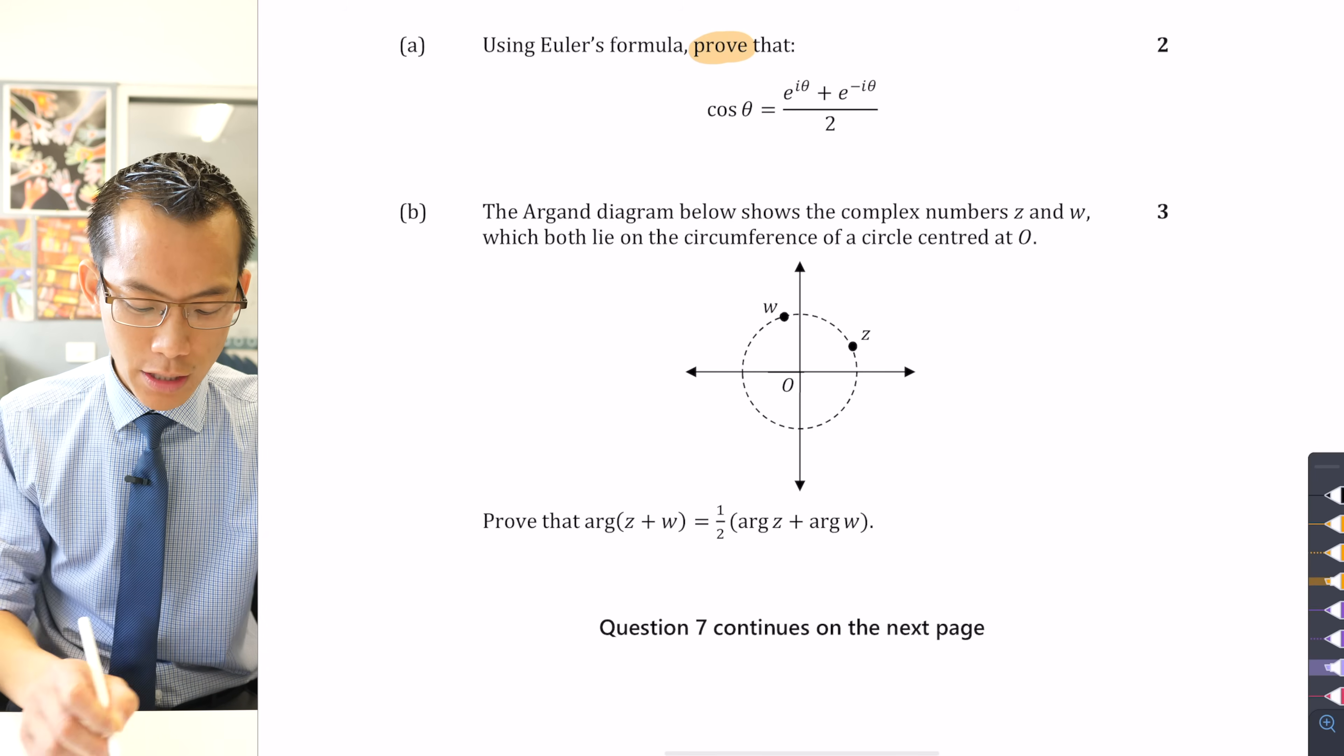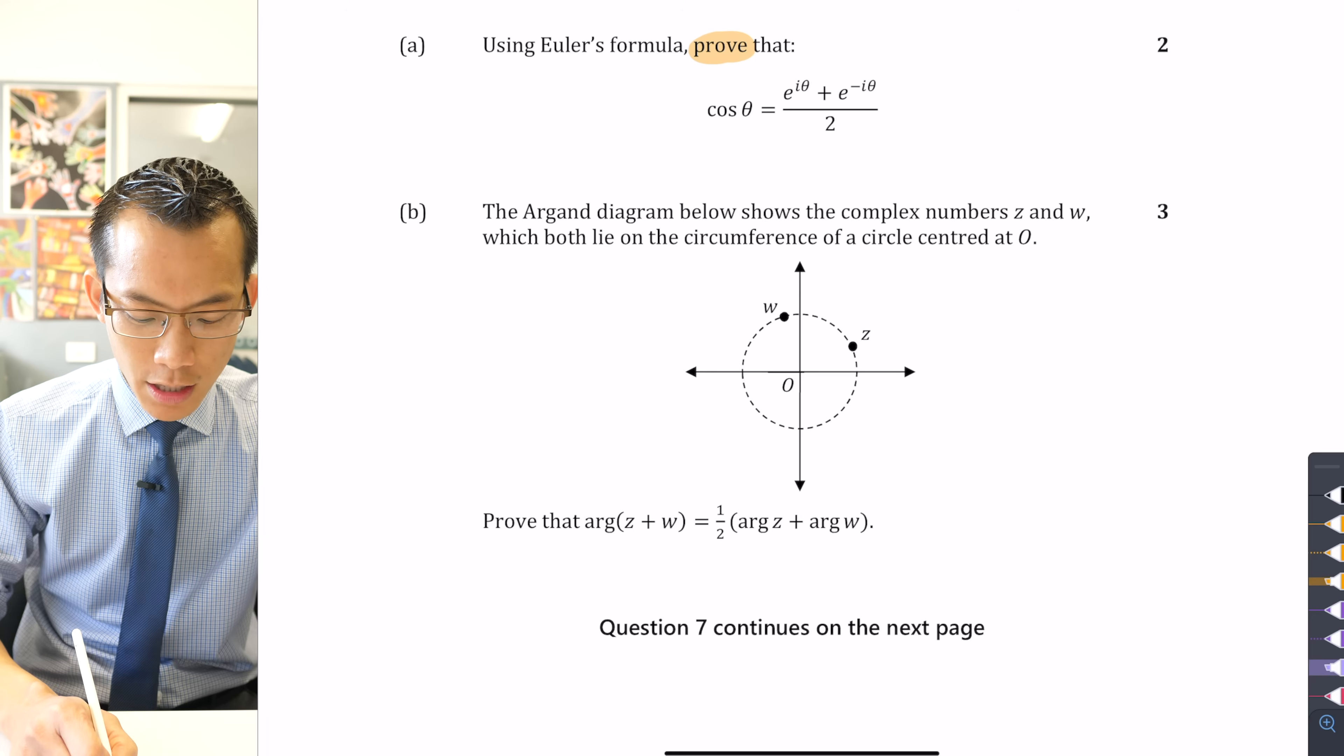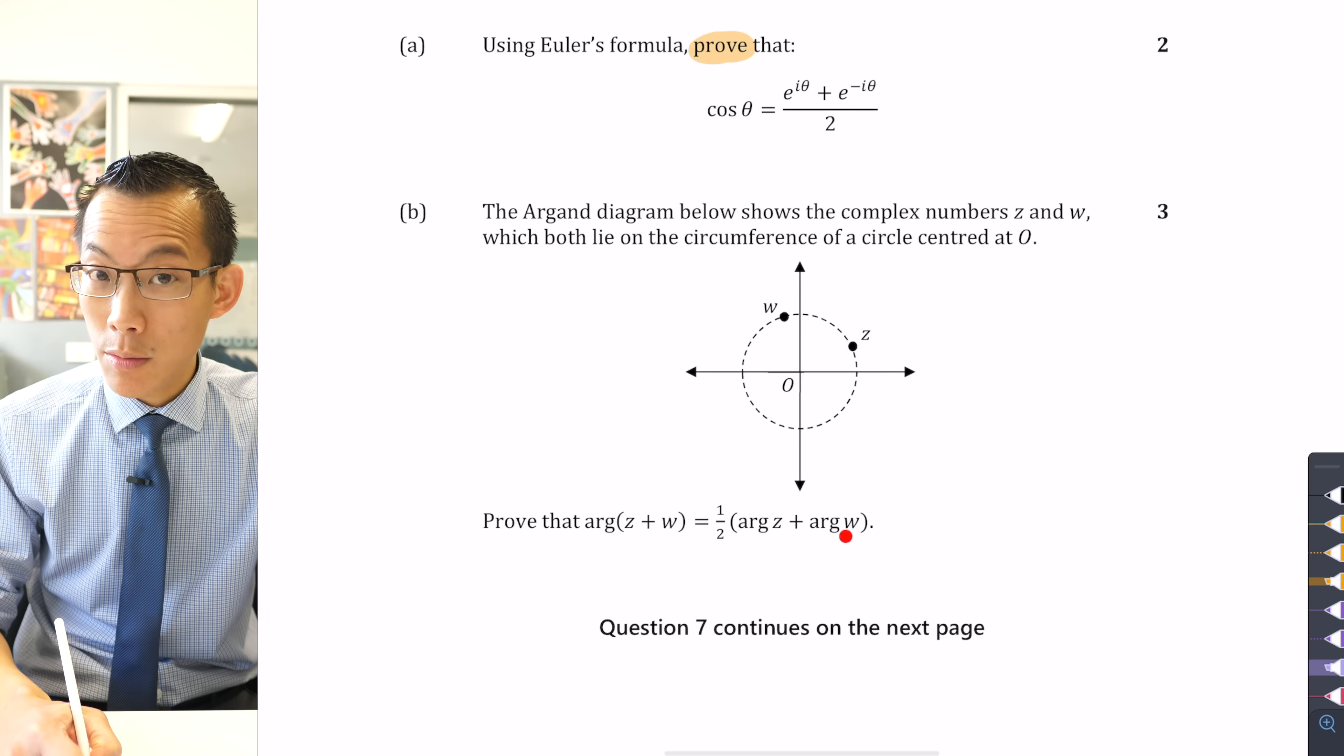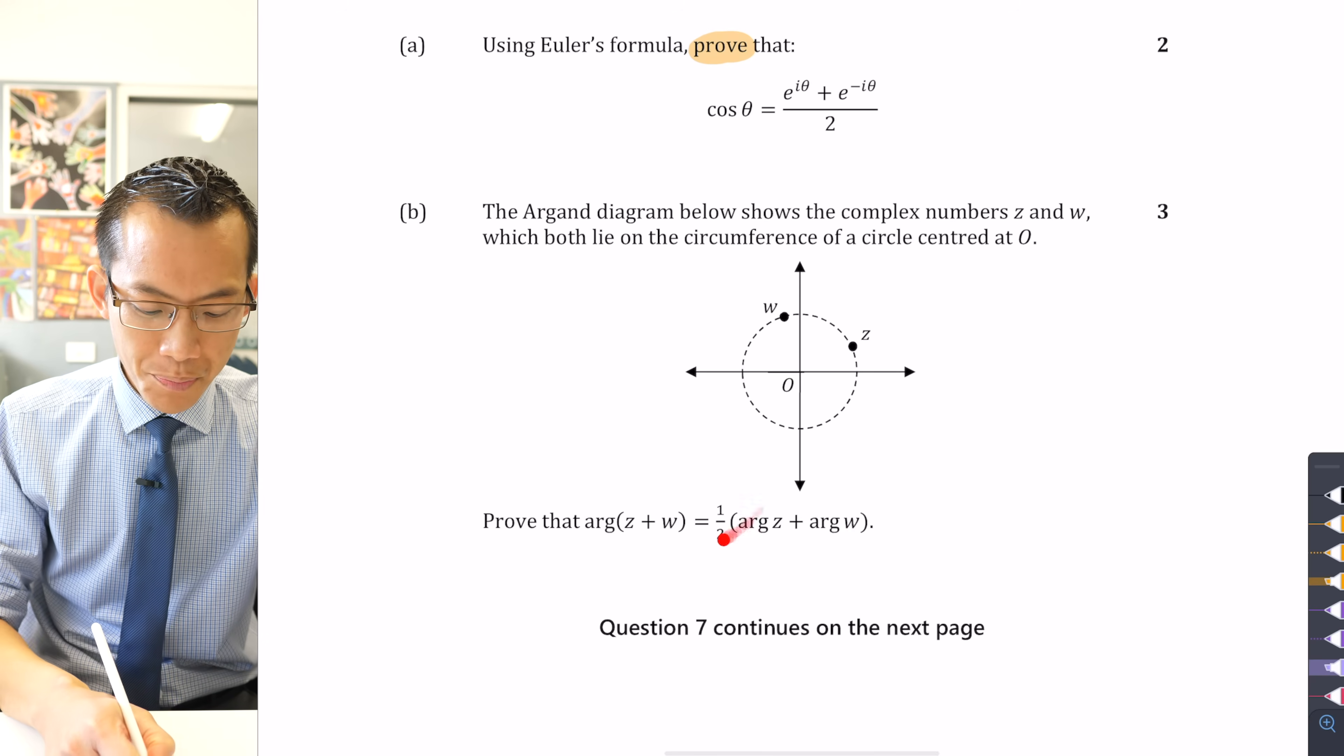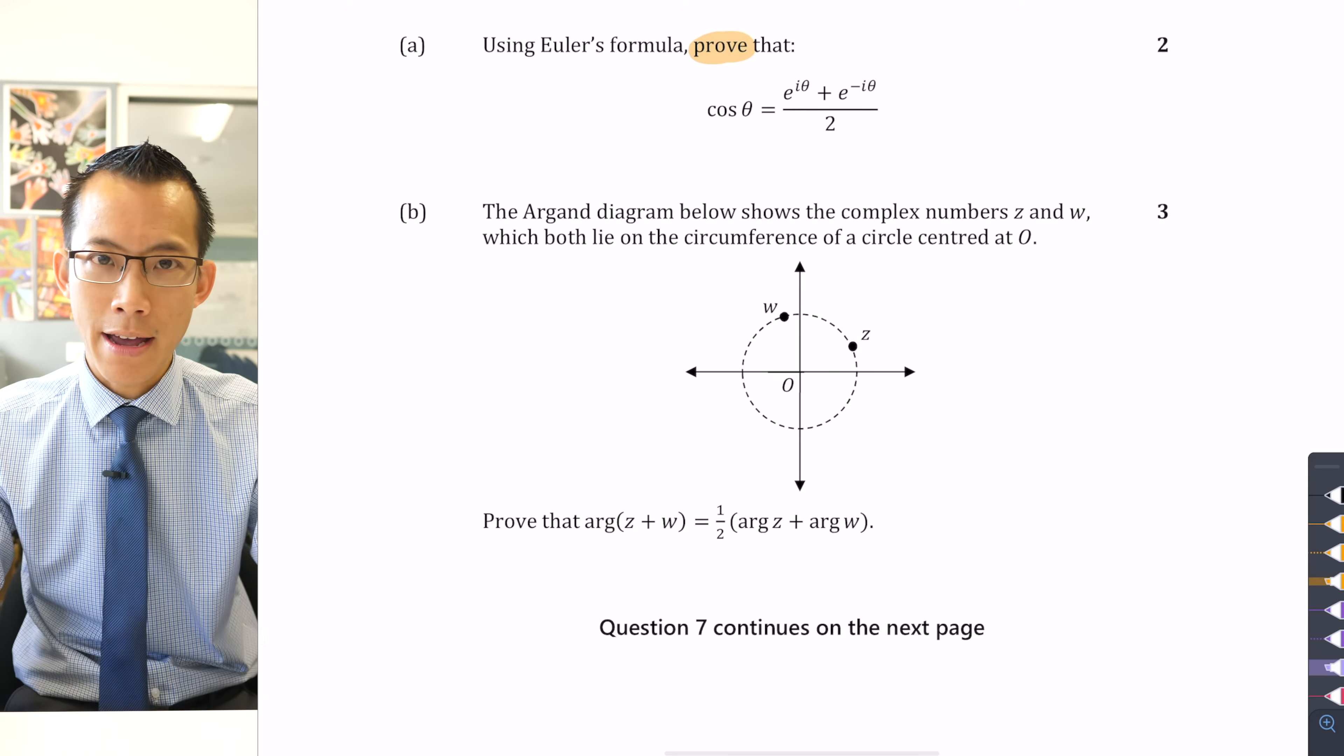And then you get asked to prove this particular geometric result down here that relates the argument to z, so you can draw that in, and the argument to w, which you can also draw in, to the argument of z plus w, which isn't on our diagram yet.